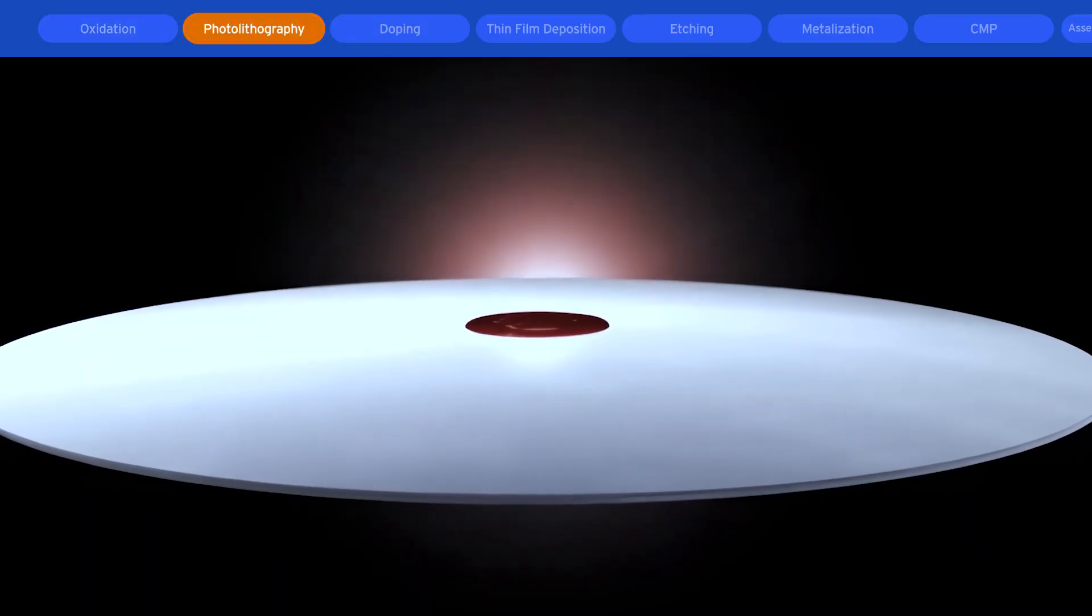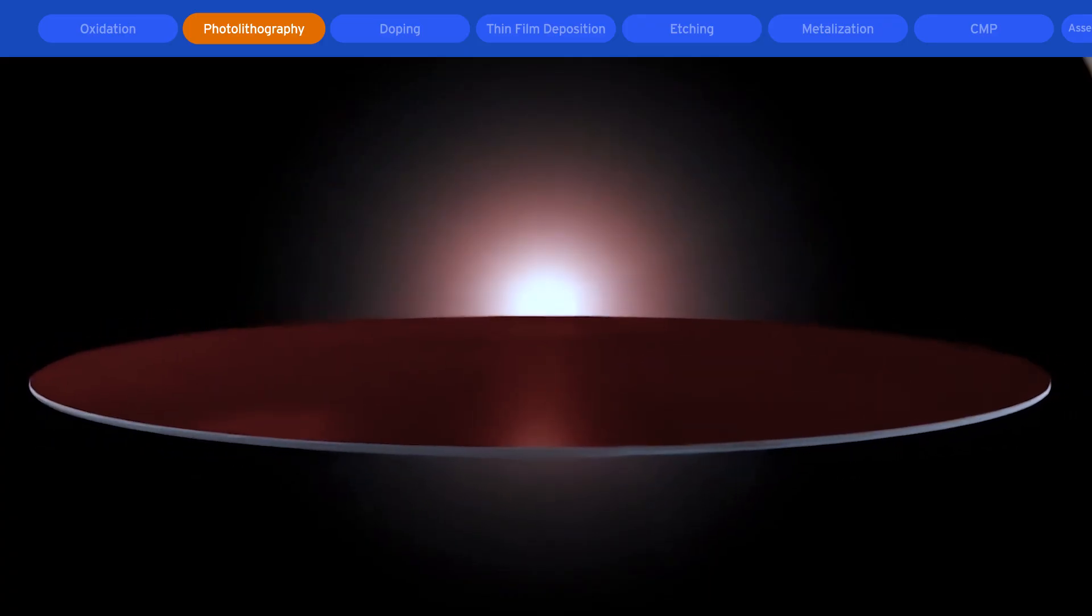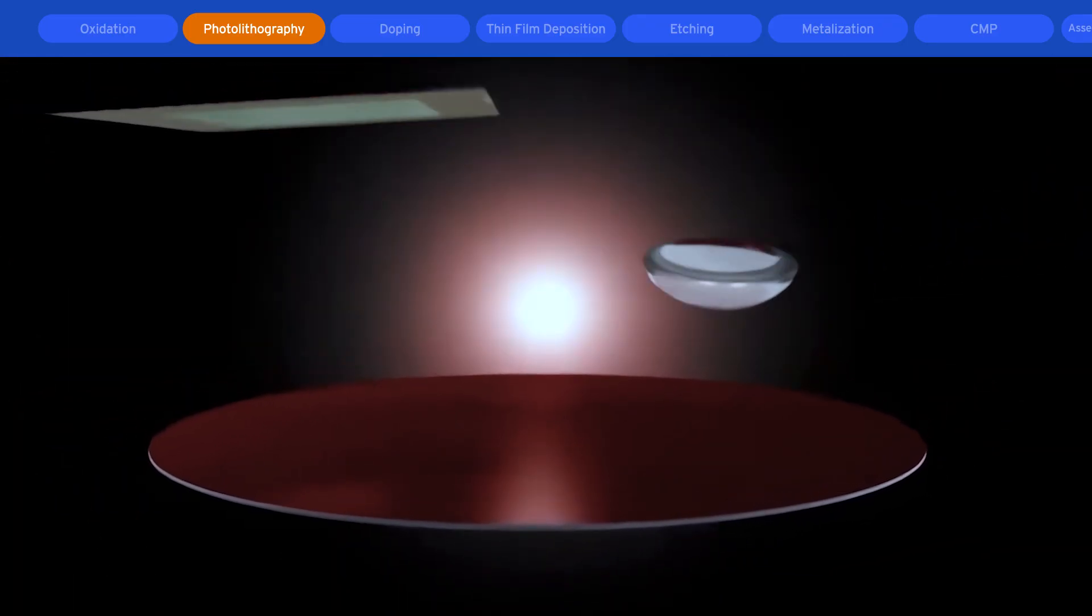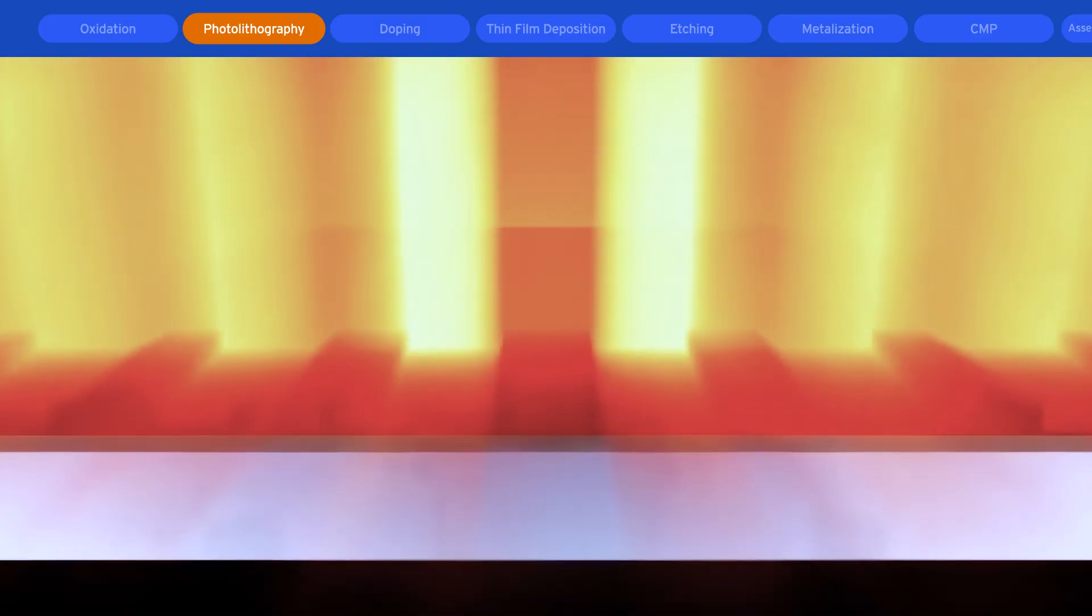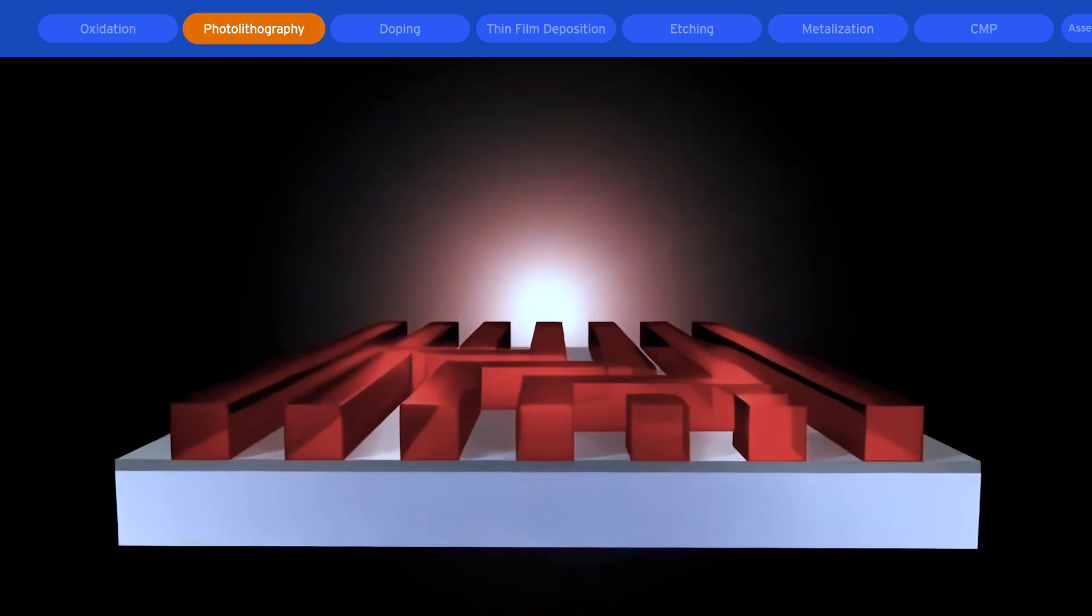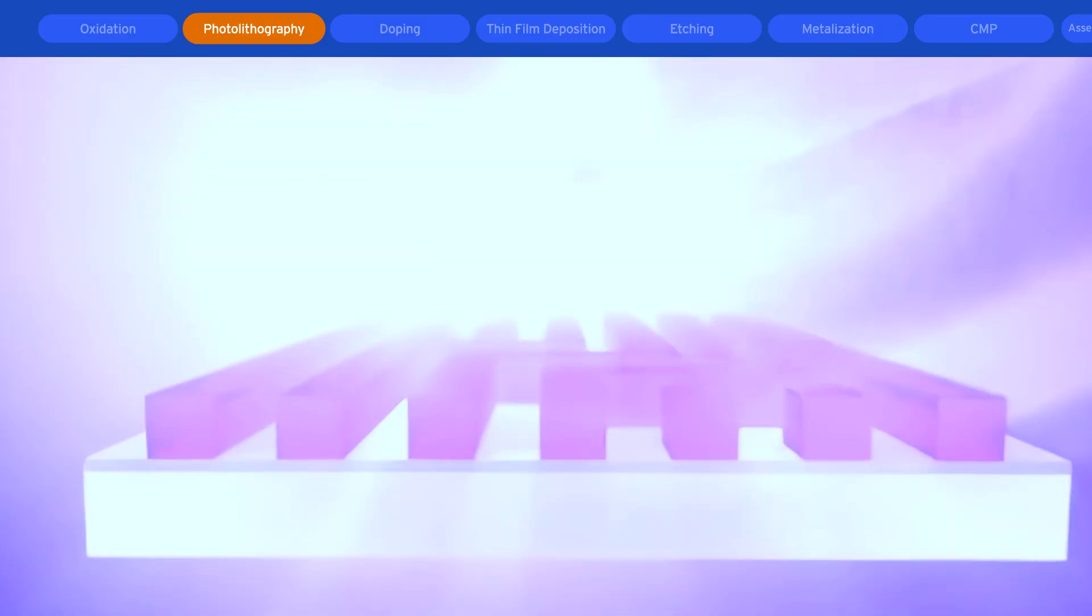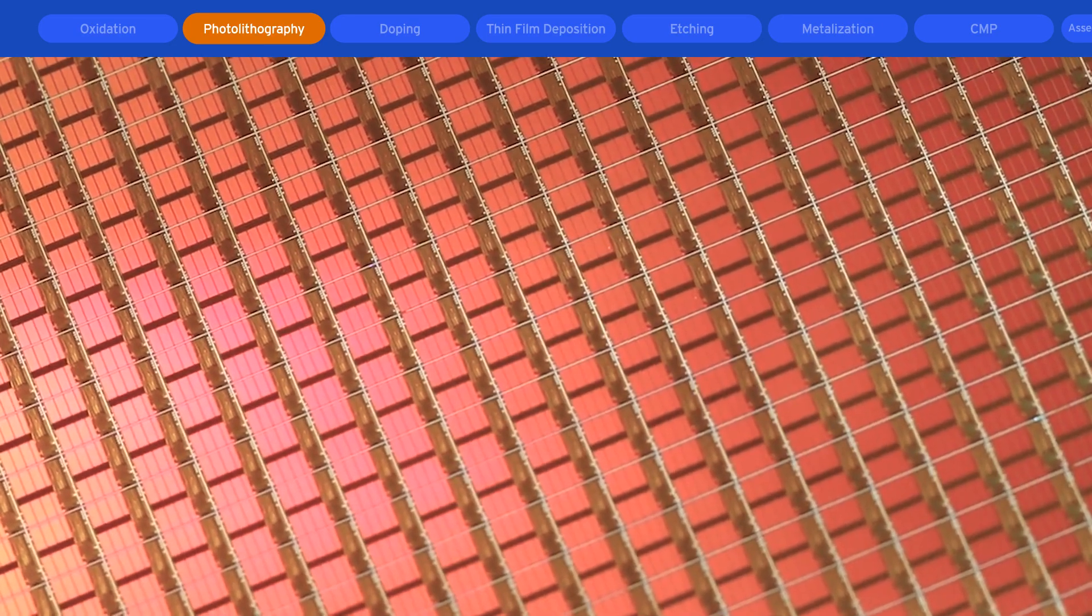Photolithography is a process that defines where to add or remove materials in subsequent steps of the fabrication of integrated circuits. It creates extremely small patterns, down to a few nanometers in size, with precise control of the shape, size, and placement of the images it produces.